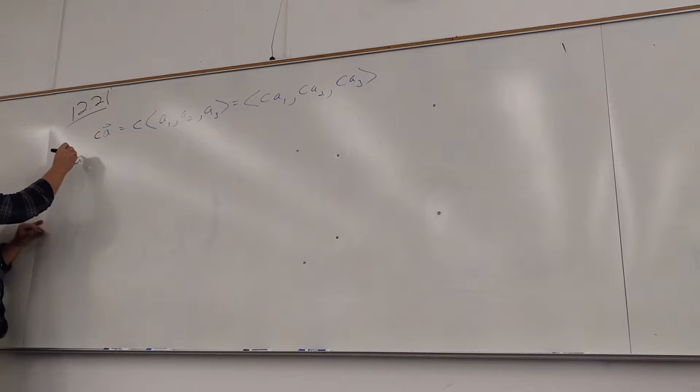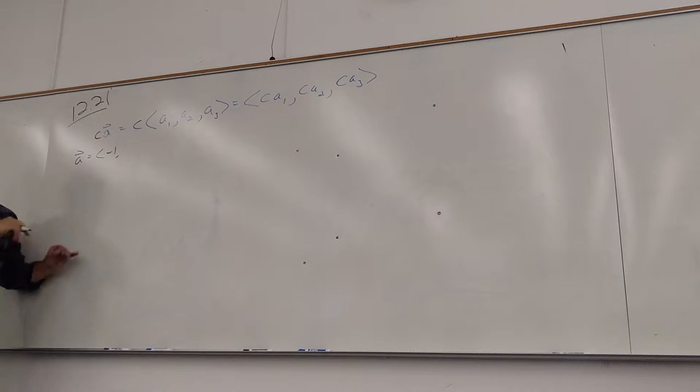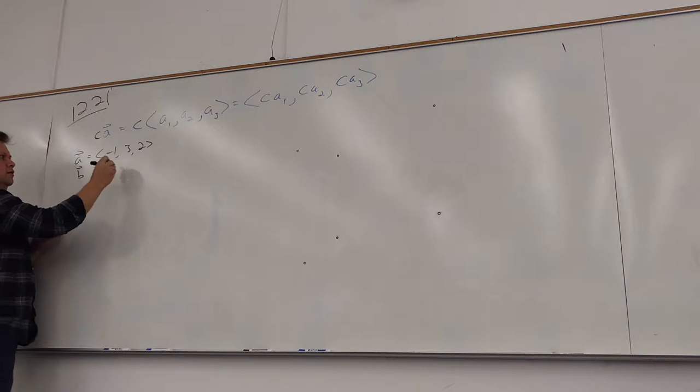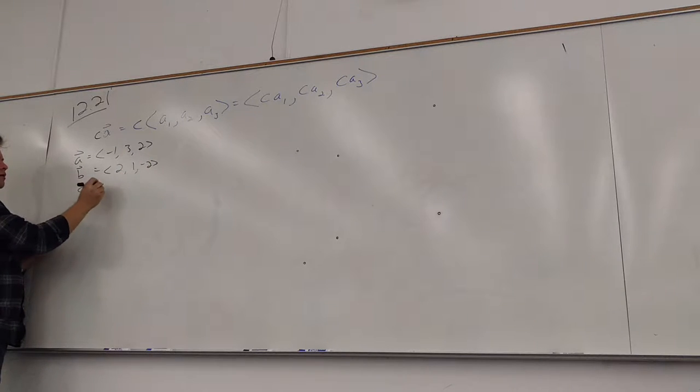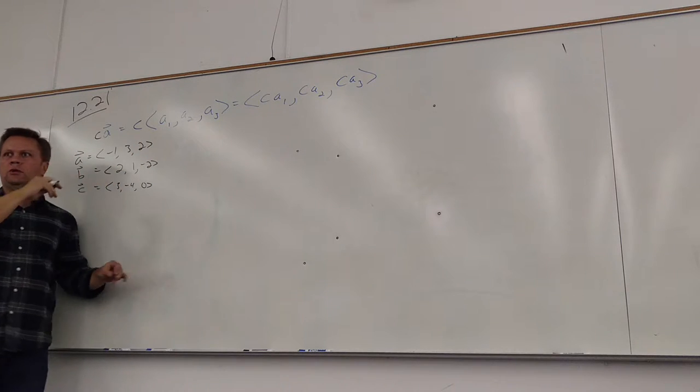What were the vectors again? What did I call them, A, B, C? What was A? Negative 1, 3, 2. B is 2, 1, negative 2. C is 3, negative 4, and 0. All right, so hopefully the links weren't too challenging, but be careful.